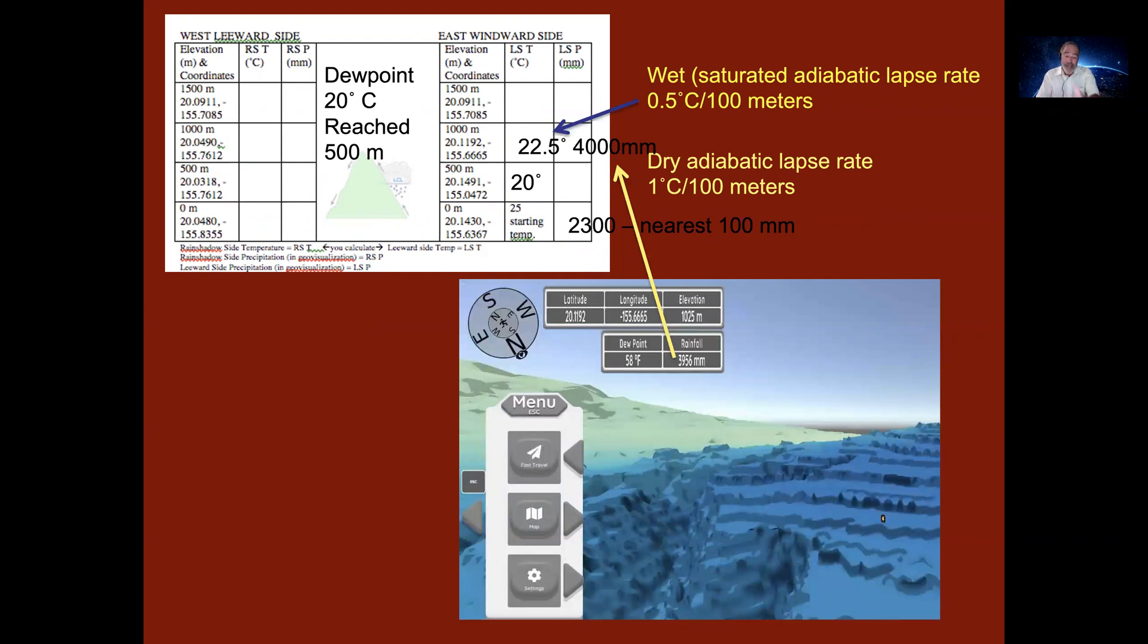Then at the next elevation that you're going to measure, you simply pop up to 1000 meters. Because the dew point has been reached, the dew point is 20 degrees. Because the dew point has been reached, you're cooling at the wet adiabatic lapse rate. And so that 500 meters, the net cooling is 0.5 every 100 meters or 2.5 degrees, with the rainfall being closest to 400 millimeters.